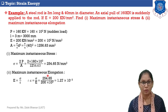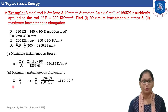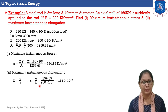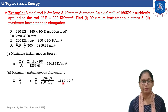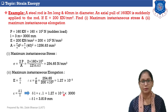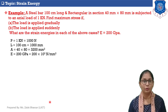Now maximum instantaneous elongation. E = sigma / epsilon, so epsilon = sigma / E = 254.65 / (200×10³) = 1.27×10⁻³. Since delta L equals epsilon into L: delta L = 1.27×10⁻³ × 3000 = 3.819 mm.